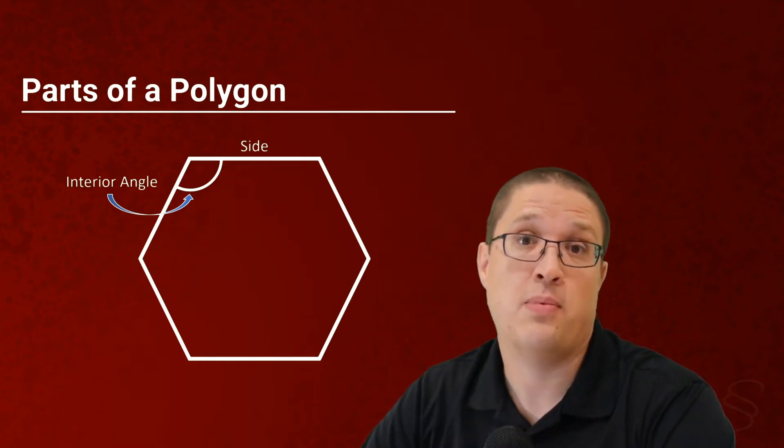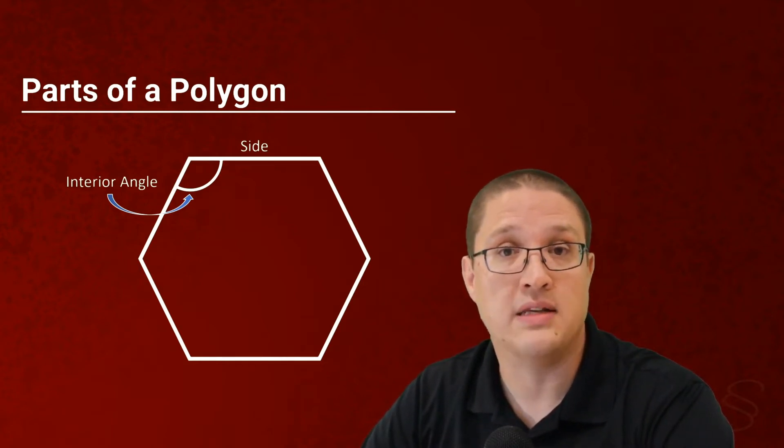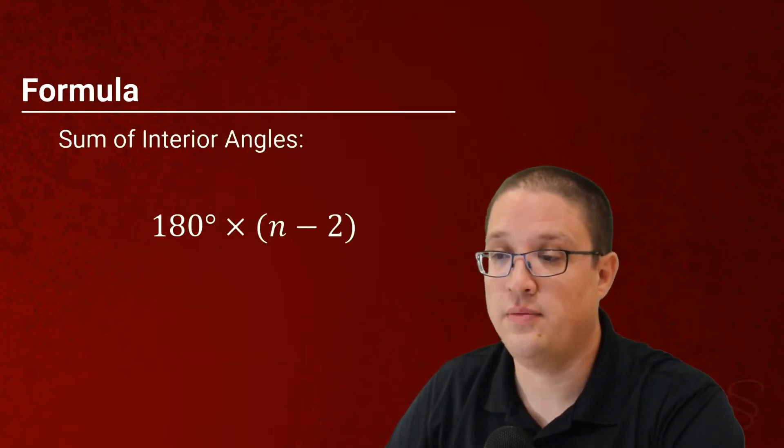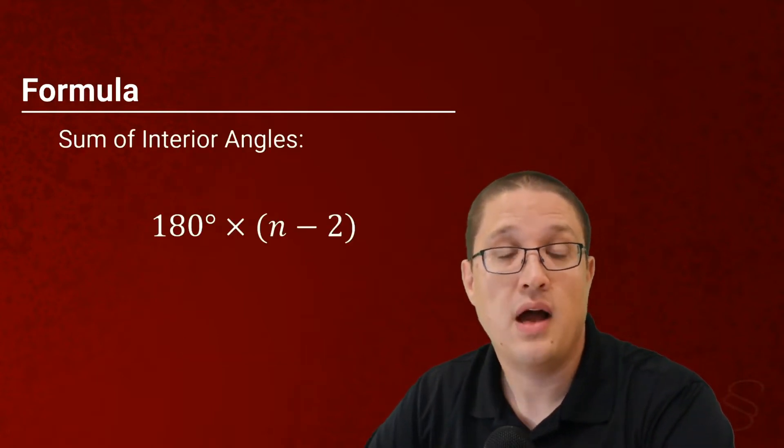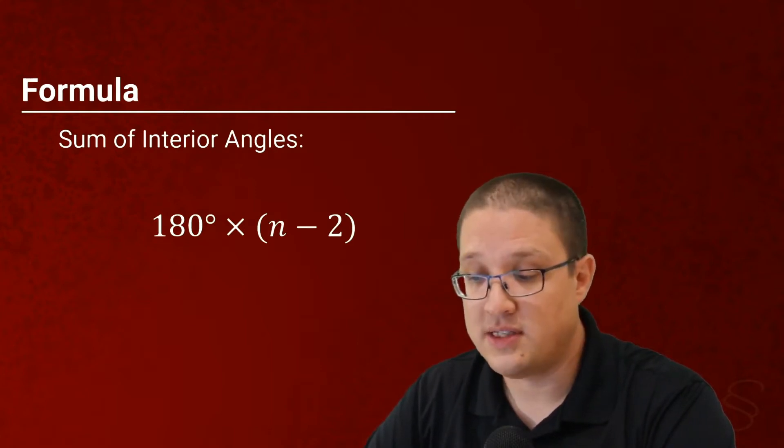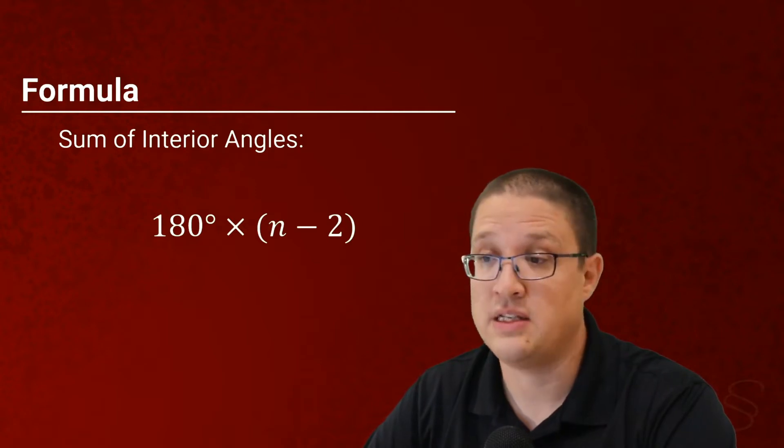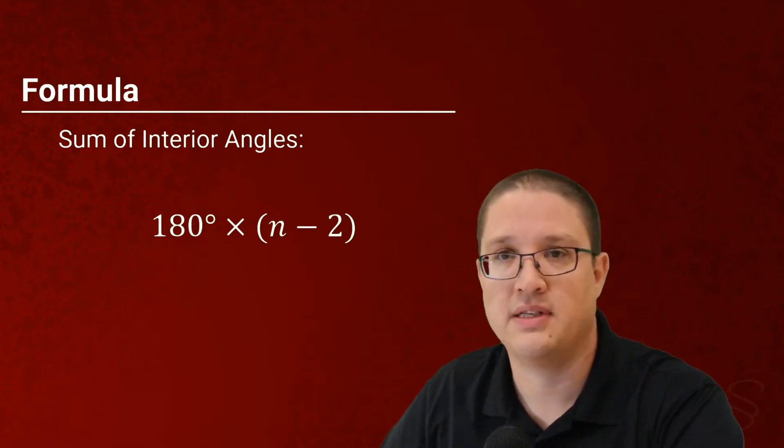One of the useful properties of a polygon is that if we know how many sides there are, we can figure out all of the angles, or how much the angles add up to. We have a nice formula here for the sum of the interior angles. So the sum of the interior angles here is 180 degrees times the number of sides minus two.